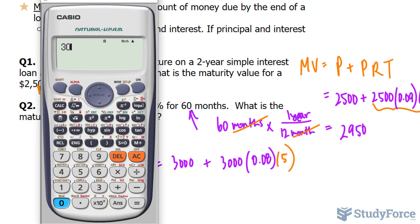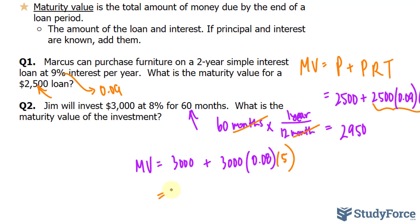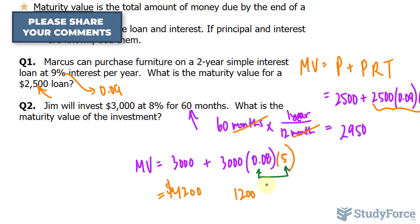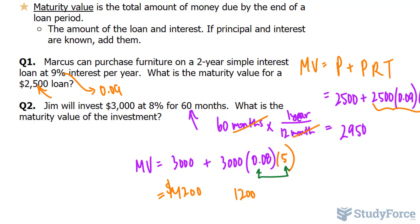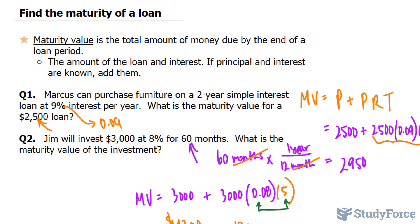Using our calculator: 3,000 plus 3,000 times 0.08 times 5, and that gives us 4,200. So if he invests $3,000 for 60 months at 8%, this is what he will have at the very end — he will have earned $1,200 from the starting point of $3,000. We learned a very valuable lesson here: the units need to match. The rate is per year and the time must also be in years — they need to match in order for you to be successful with these types of calculations. And there you have it, that is how to find the maturity of a loan.